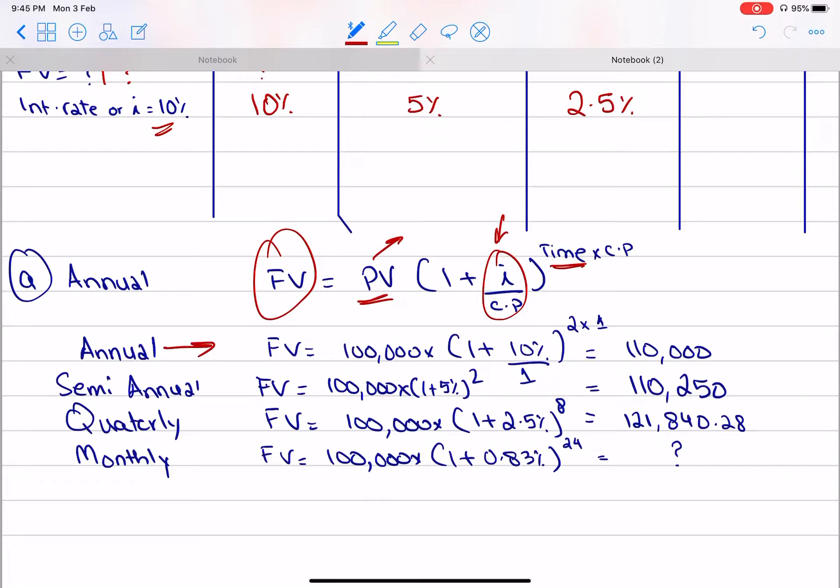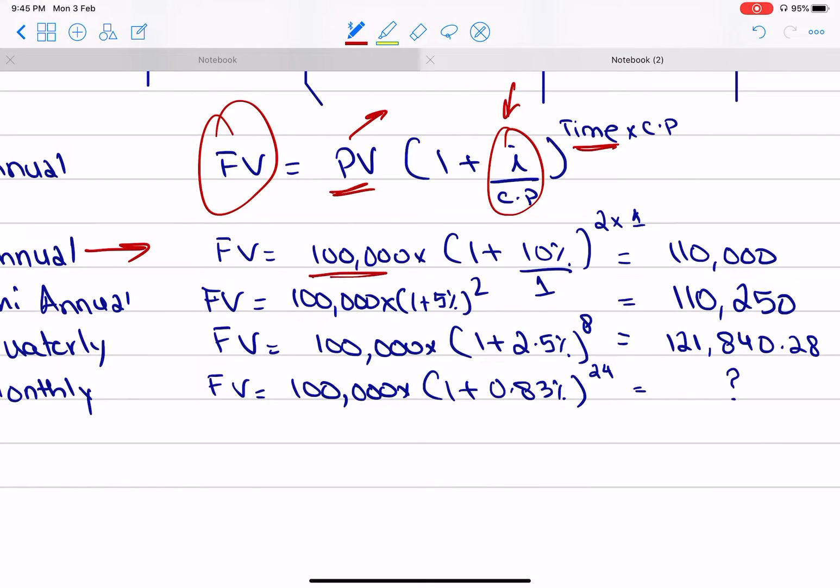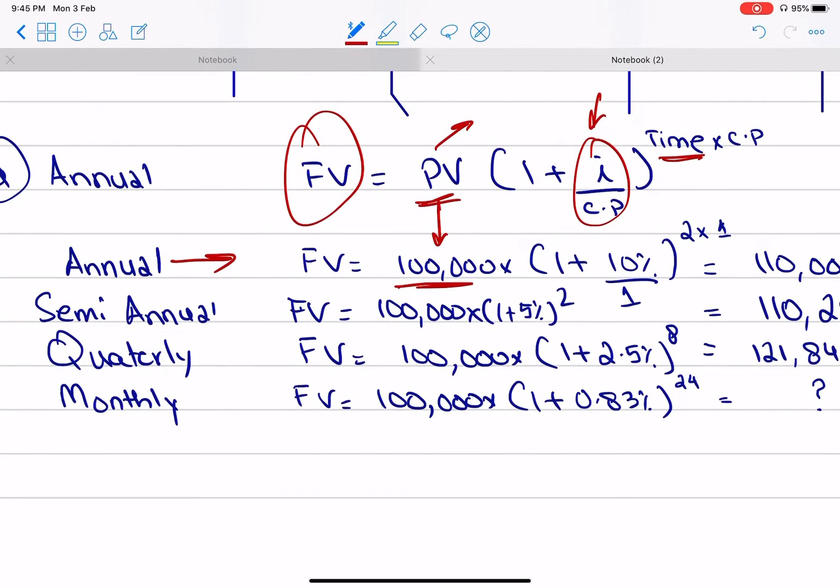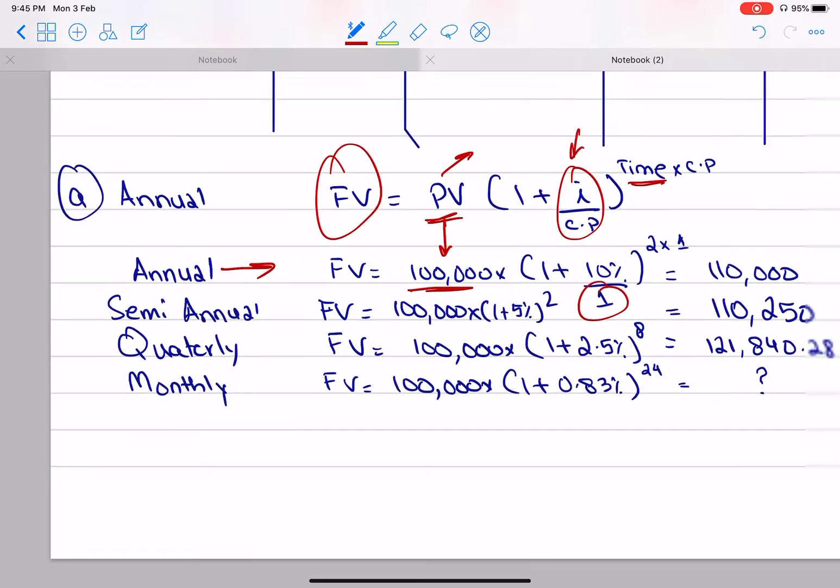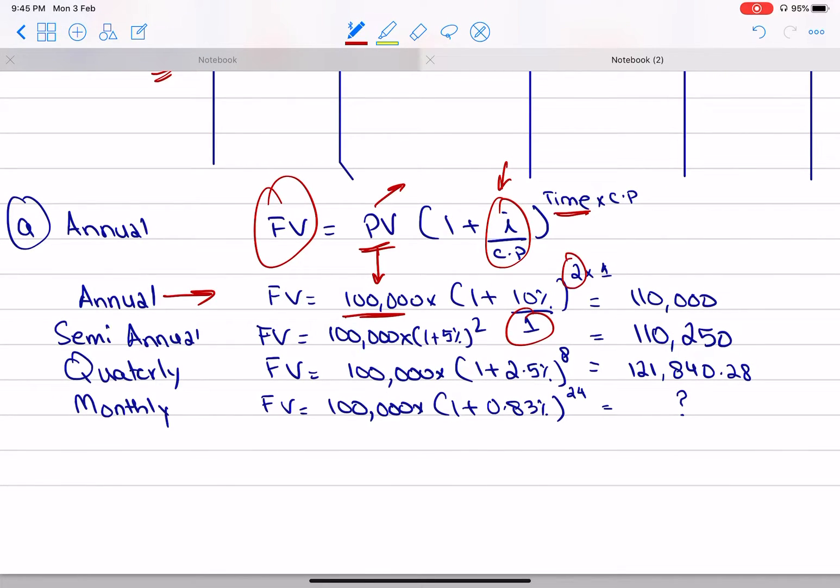If the question asked is annual, I'm going to invest $100,000. That is my present value. Interest rate is 10%, and the compounding period is annual. What do we use? 1. Time is 2 years. What is the compounding period? 1. These two values are always the same. The answer is $110,000.